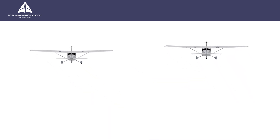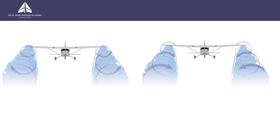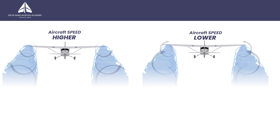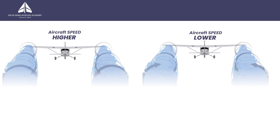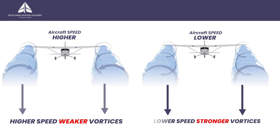We also know that vortices get stronger at lower speeds. This might be a little counterintuitive, so look at it this way: for an aircraft in equilibrium the pressure difference above and below the wing doesn't change — it is fixed by the weight of the aircraft. When the aircraft is moving fast, the air flowing past the wing spends very little time there and only gets a small rotation imparted upon it. However, as the aircraft slows down, the air flowing past the wing spends more time there and as a result will rotate more rapidly. So: higher speed, weaker vortices; lower speed, stronger vortices.